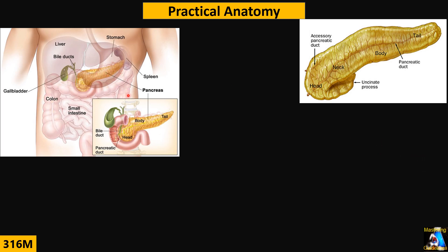The pancreas is located in the retroperitoneal space in the upper part of the abdomen. It has different parts — head, neck, body, and tail — which we will talk about in detail. The orientation of the pancreas is oblique, not transverse.